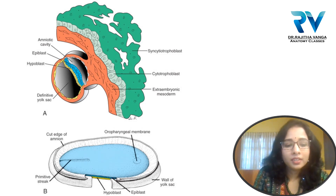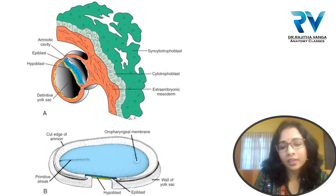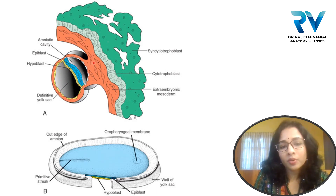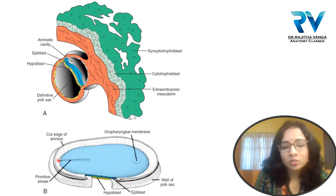Here is the sagittal section of the developing embryo where we can see a bilaminar structure present by the end of the second week. The blue cells are the epiblast cells and the yellow ones are the hypoblast cells. We have the yolk sac, and above the epiblast cells the cavity is called the amniotic cavity. The connection of extra-embryonic mesoderm with the cytotrophoblast later turns to form the connecting stalk.